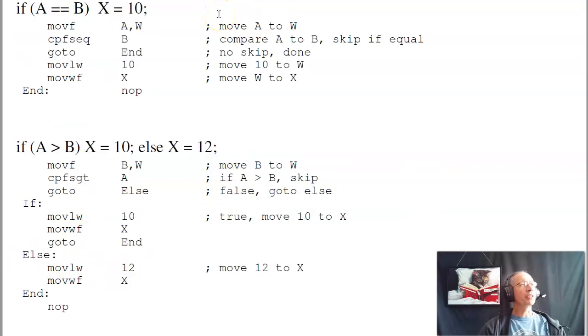If statements. This is where the skip if equal command comes in. If I want to say if A is equal to B, set X equal to 10, otherwise do nothing. To do that, I'm going to do the compare skip if equal command. To execute it, I have to first set it up. I'll first move A to W, then compare A to B. If it's equal, skip the next command. If it's not equal, I don't skip, and I'll just jump to the end. If it is equal, I skip, and I move 10 to W, move W to X. So this will actually execute if A is equal to B, x is equal to 10.